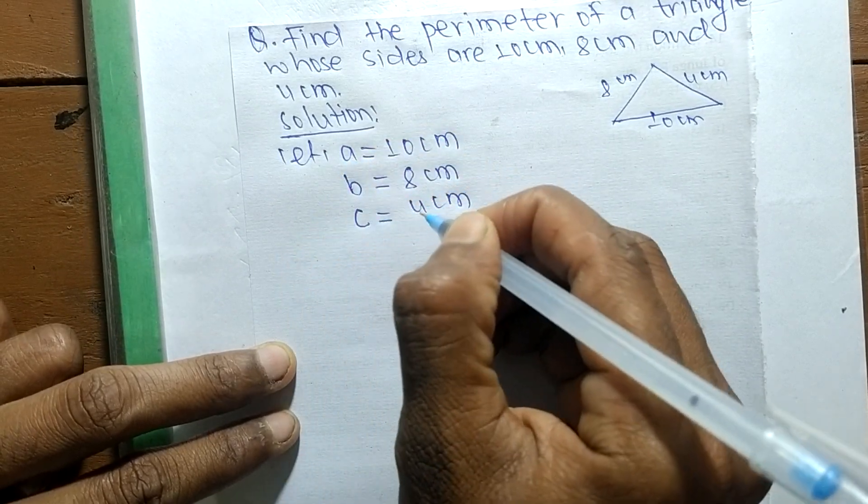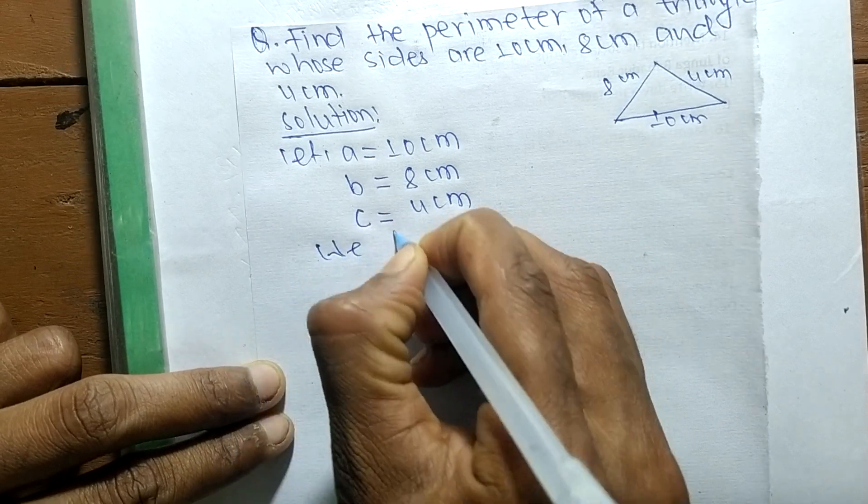So ABC are the sides of a triangle. So we know that